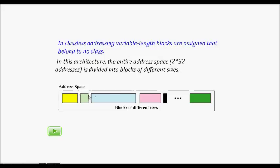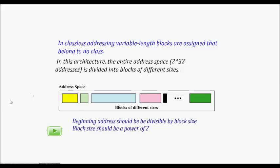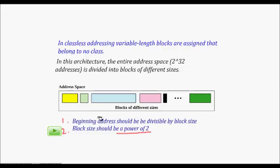There are two restrictions on classless addressing. First, the beginning address must be divisible by the block size. Second, the block size must be a power of two. These two restrictions are important.